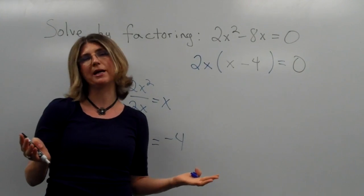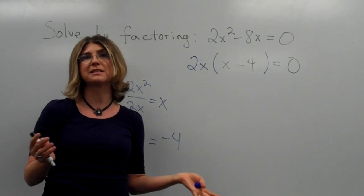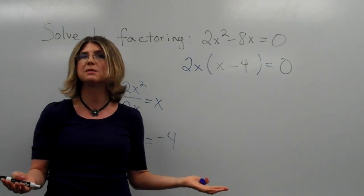I mean, we can't take like 1 third times negative 2 and get 0, or 0.3 times 68 and get 0, right? One of the two things has to be 0.